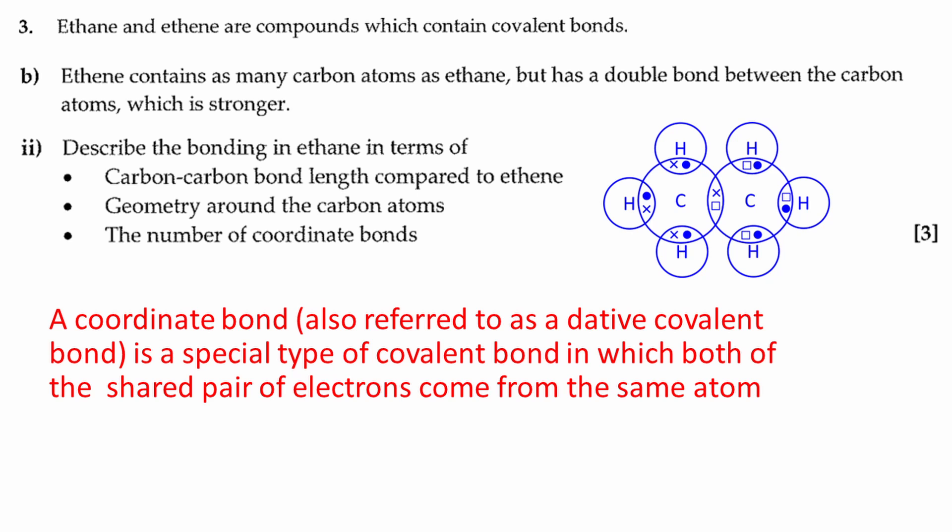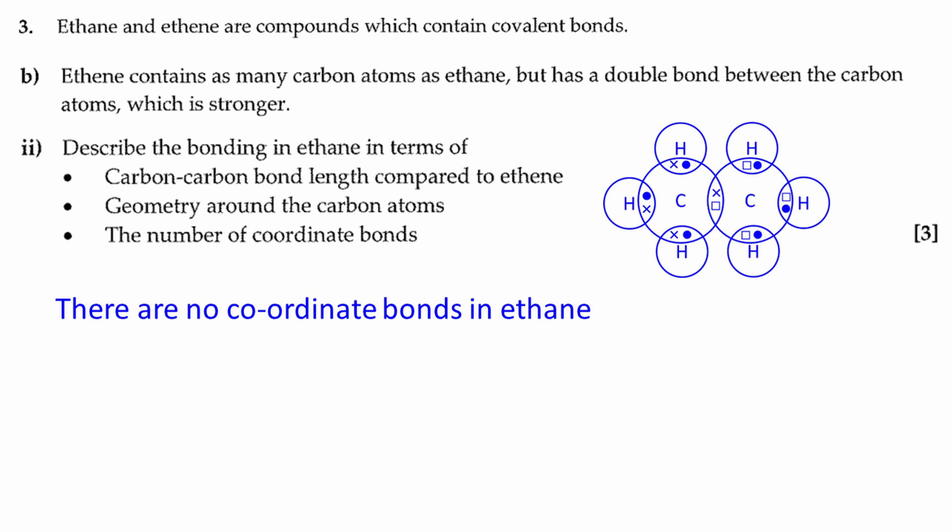And finally, a coordinate bond, also referred to as a dative covalent bond, is a special type of covalent bond in which both of the shared pair of electrons come from the same atom. The dot and cross diagram shows that there are no coordinate bonds in ethane.